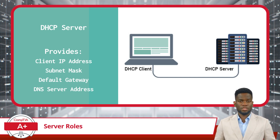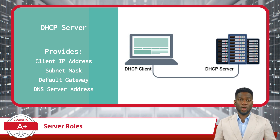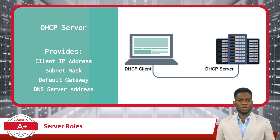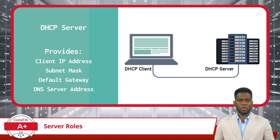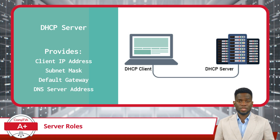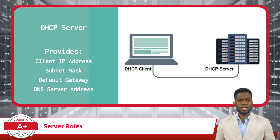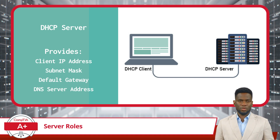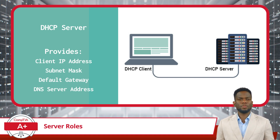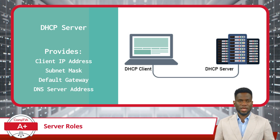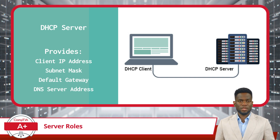In addition to IP addresses, DHCP servers also provide other important configuration options, like a subnet mask, which helps in identifying the network segment a device is on; the default gateway, which is the device that routes traffic to destinations outside the local network; and DNS server addresses, which ensure a device can translate human-friendly domain names into IP addresses. This automatic provisioning of network settings greatly simplifies connecting and configuring new devices in a network.